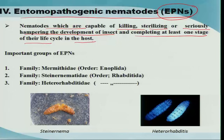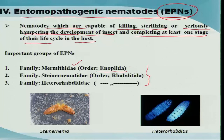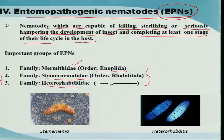There are several groups, but I am concentrating on three important ones. One is the family Mermithidae under the order Enoplida, which has bio-control potential against dipterans. But we are focusing on two families: Steinernematidae and Heterorhabditidae, which come under the order Rhabditida and are globally well exploited for managing pests.